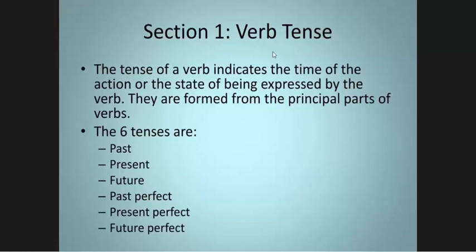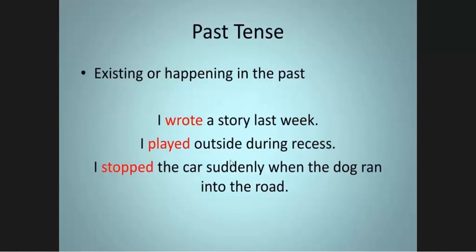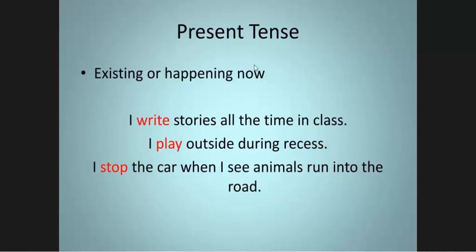Now we talk about verb tenses. The tense of the verb has six types: present, past, future, present perfect, past perfect, and future perfect. When you think about past tense, it means you talk about an action that happened in the past, an action finished completely. For example: 'I wrote a story last week', 'I played outside during recess', 'I stopped the car suddenly when the dog ran into the road.'